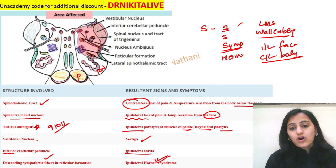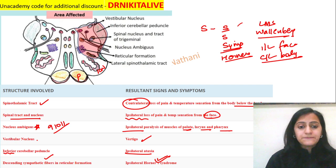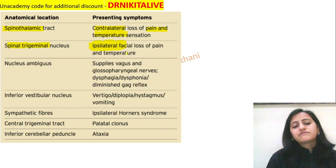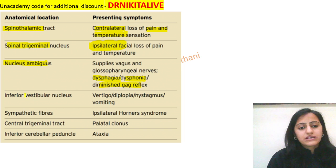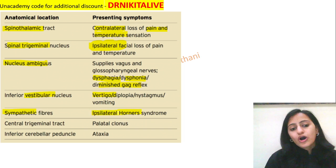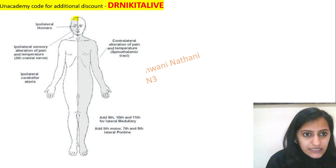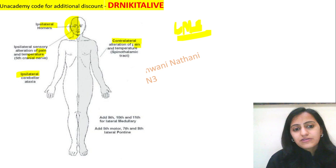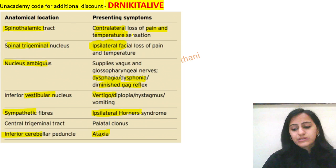Horner's syndrome is a manifestation of lateral brainstem syndromes. To recap lateral medullary syndrome: spinothalamic tract gives contralateral pain and temperature loss from the body below the head; spinal trigeminal nucleus gives ipsilateral facial loss of pain and temperature — very important; nucleus ambiguus causes dysphagia and diminished gag reflex; vestibular nucleus causes vertigo; sympathetic fibers cause ipsilateral Horner's; and the inferior cerebellar peduncle causes ipsilateral cerebellar ataxia.